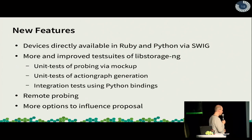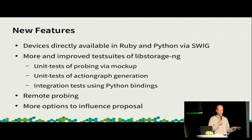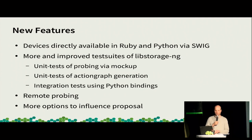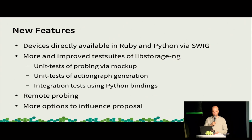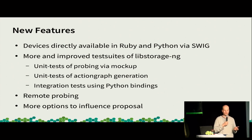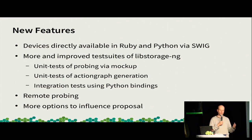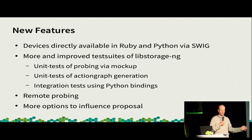A few more internal new features: the devices are now directly exported to Ruby from C++ via SWIG bindings — they are all generated automatically, the callbacks also are generated automatically, so there's no handmade stuff here. This makes programming in Ruby far easier than dealing with the target map. This library itself has far more unit tests. We have unit tests for probing where we just mock the external commands we run, because basically all information we get from the system is gathered via running external commands — parted, LVM tools, MD-RAID. By mocking those we can test the probing, which was not possible in the old library.